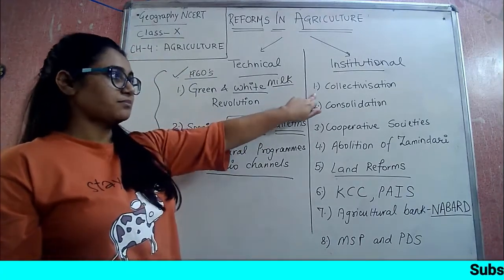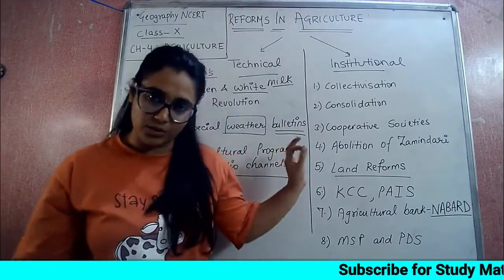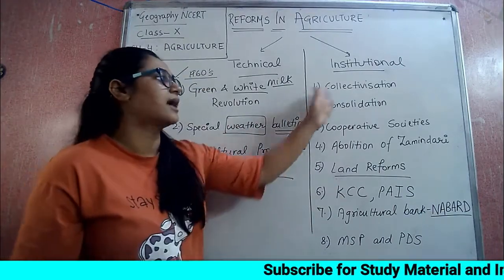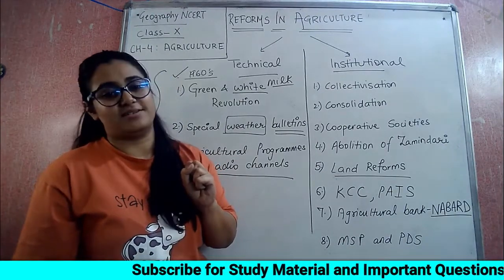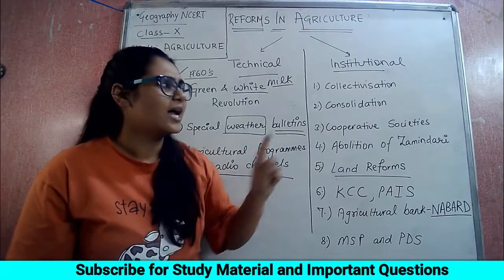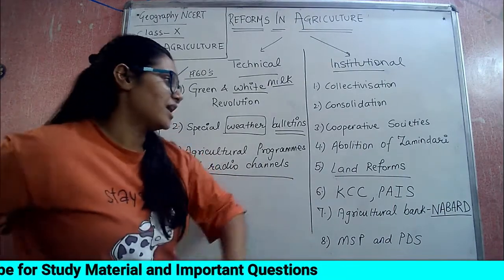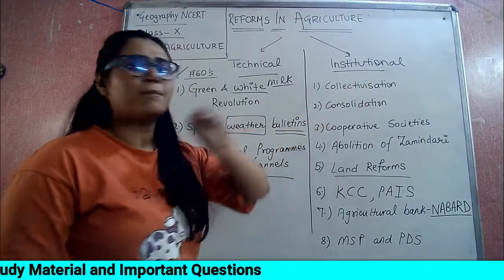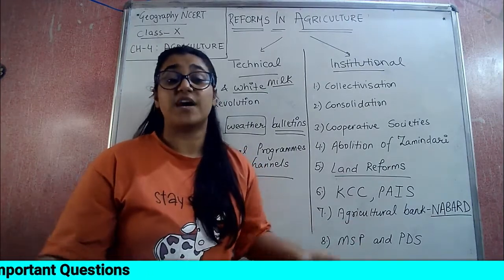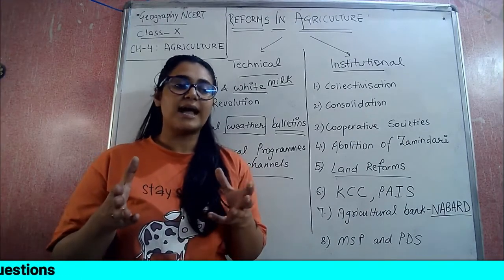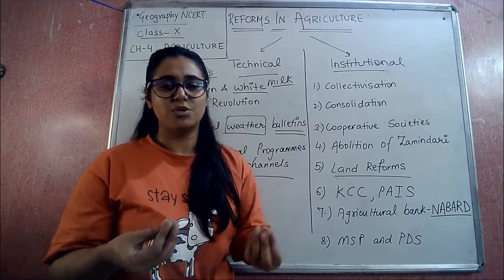The first institutional reform is collectivization. Many students may have forgotten what this is. Collectivization was started in Russia (USSR) - it is related to the Russian Revolution, which you studied in Class 9. Simple meaning of collectivization: we know that one person may have two, three, four, or maybe five children, and land is a property that is always being distributed amongst the children.